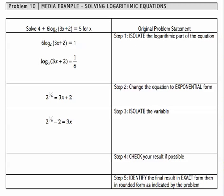The first thing I'm going to do to isolate x is to subtract 2 from both sides. If I do that, I get 2 raised to the 1 sixth power minus 2 equals 3x.